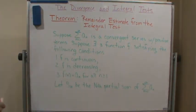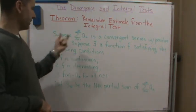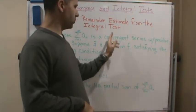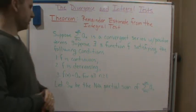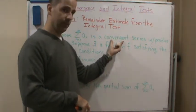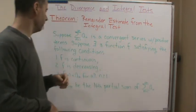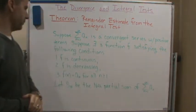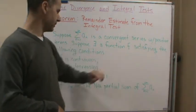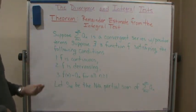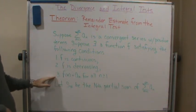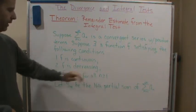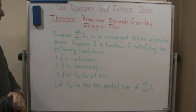You're going to notice that all of these conditions are the same conditions that we saw with the Integral Test. So it says: suppose that we have an infinite series that is convergent with positive terms. The only difference is now we're assuming that the series is convergent. Suppose also there exists a function that satisfies these three conditions — the same three conditions from the Integral Test: f is continuous, f is decreasing, and f(n) = a_n for all integers n greater than or equal to 1.